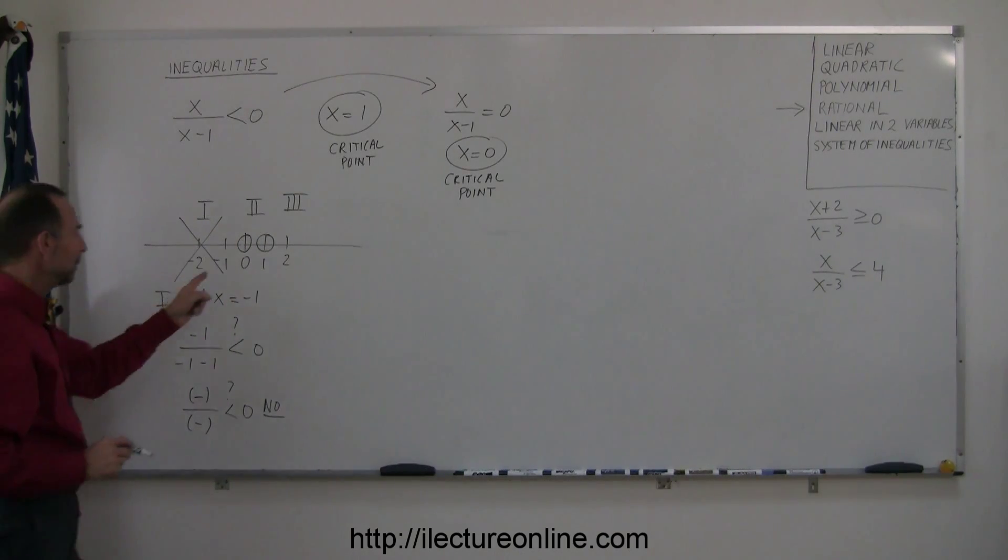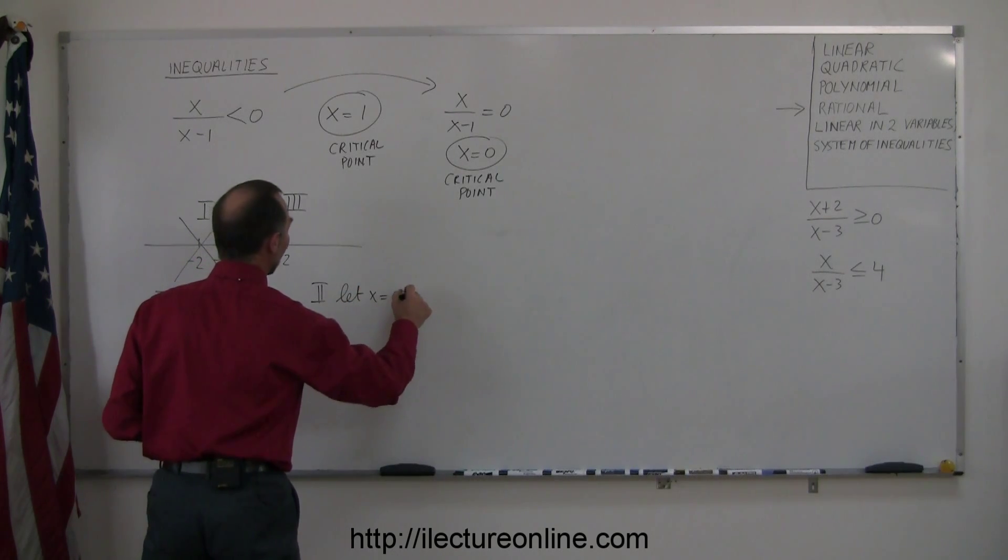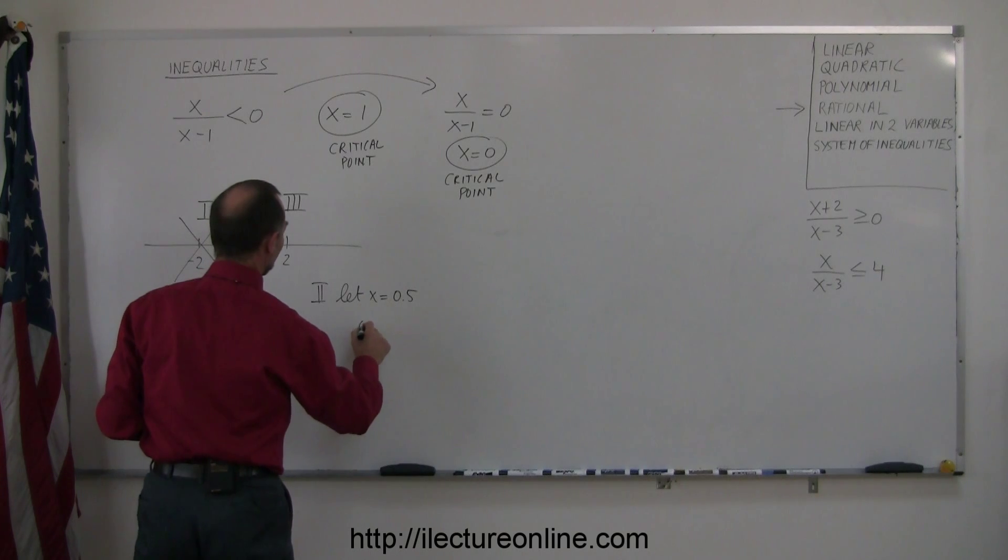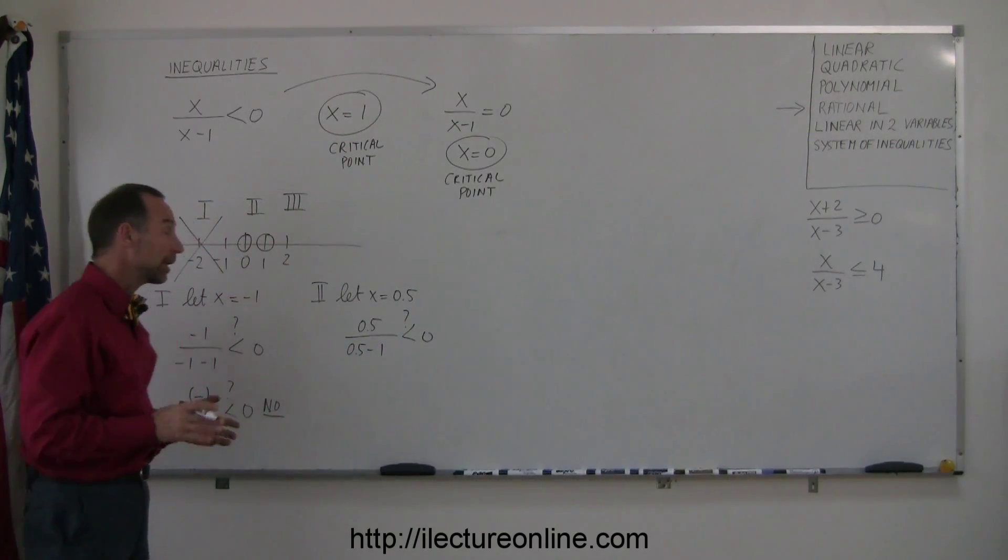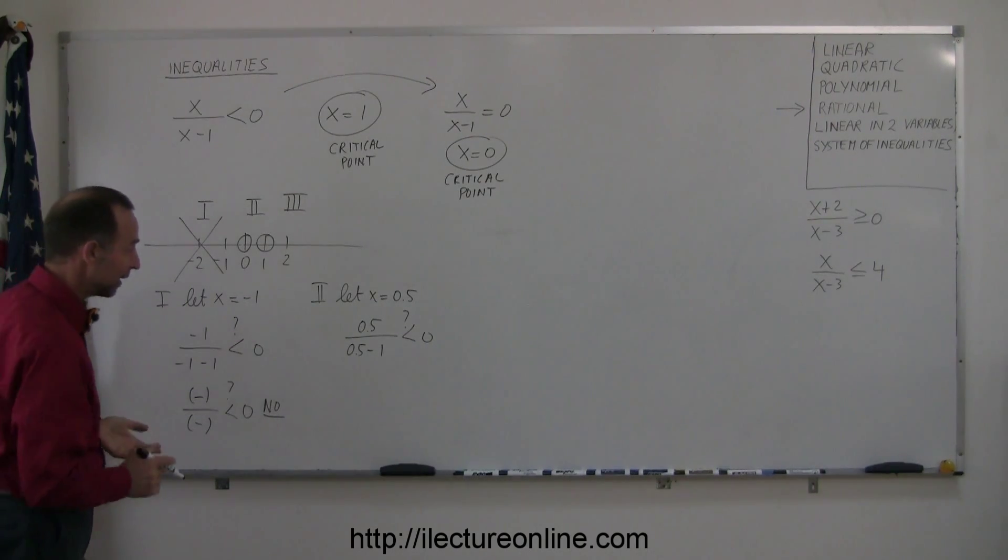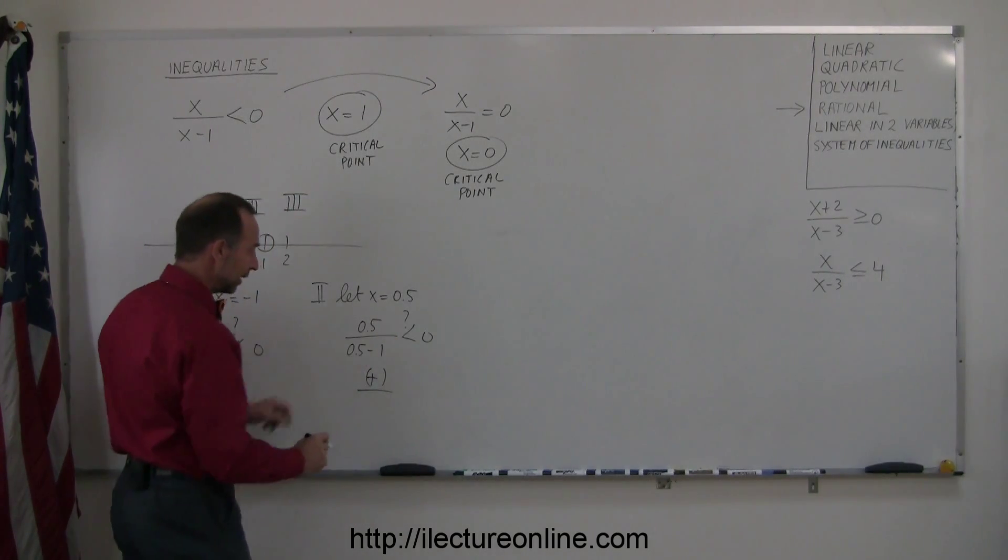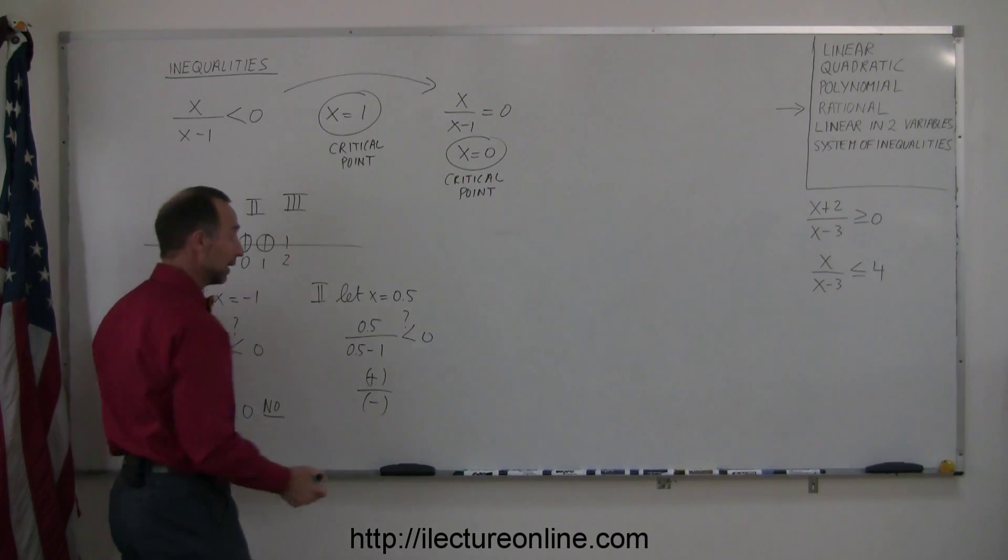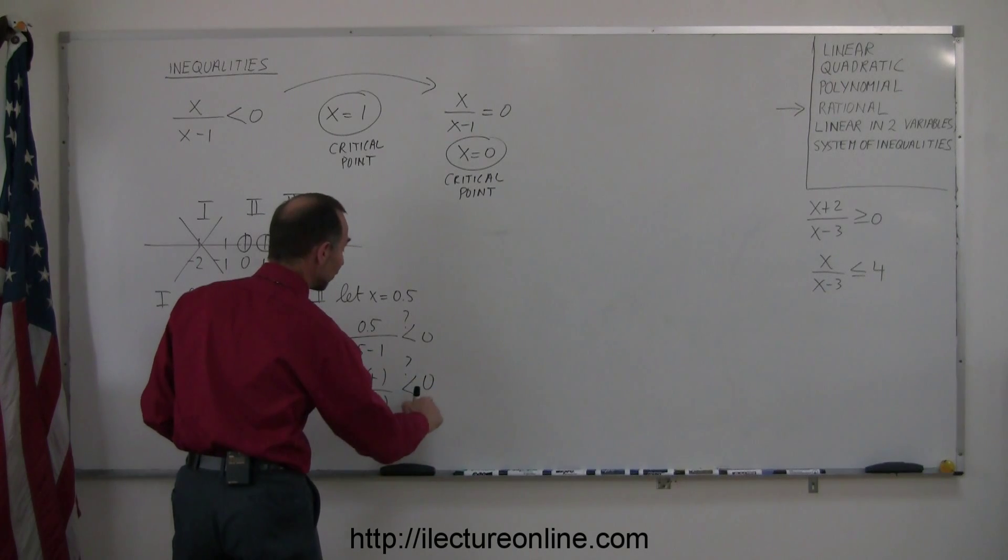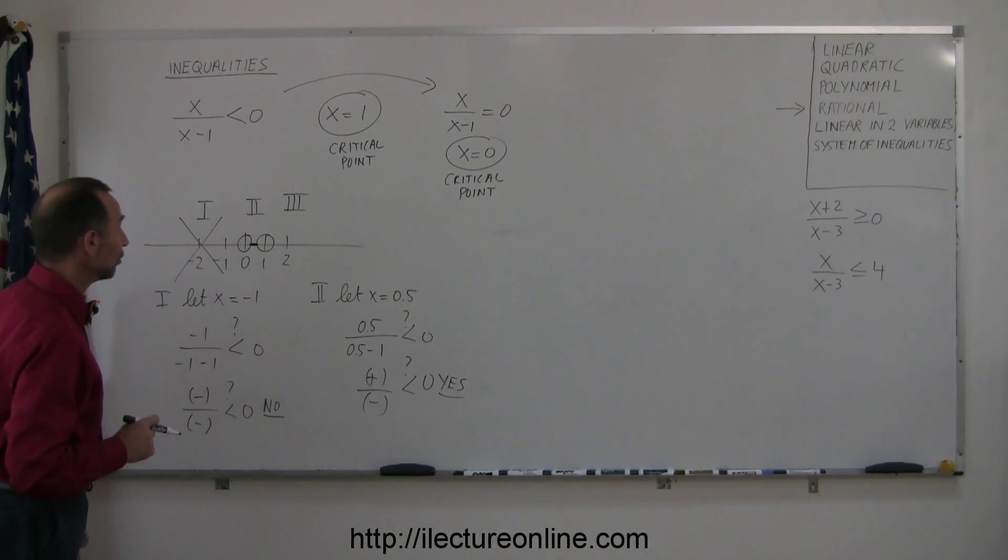Now we need to pick a point in between 0 and 1. So 0.5 is probably a good one. For region number 2, we're going to let x equal 0.5, and we'll plug that into our inequality. So we get 0.5 divided by 0.5 minus 1 less than 0, question mark. So if I plug in 0.5 for x, does that satisfy the inequality? You don't have to actually work it out. You can simply say that the numerator must be a positive number, and the denominator is a negative number because 0.5 minus 1 is less than 0. And if I divide a positive number by a negative number, I get a negative number, and a negative number is indeed less than 0, so the answer is yes. That means this region in here, between 0 and 1, is indeed part of the solution. Not including 0 or 1, because they violate the conditions.